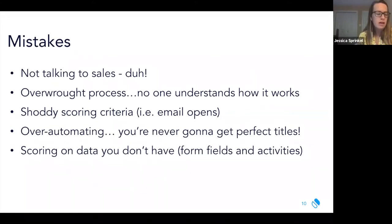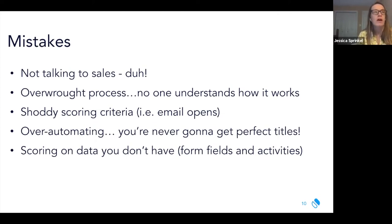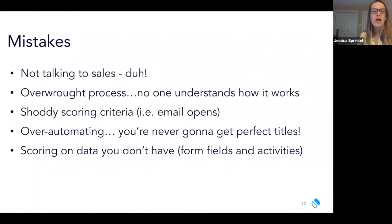Another mistake is trying to over-automate the process. For example, we see this a lot with titles, since title is usually a free-form text field and will never be 100% perfect. Be very inclusive of the titles you're focusing on. Over-automation to the point of creating new problems means you end up missing actually good leads because you're excluding things based on criteria you didn't intend.